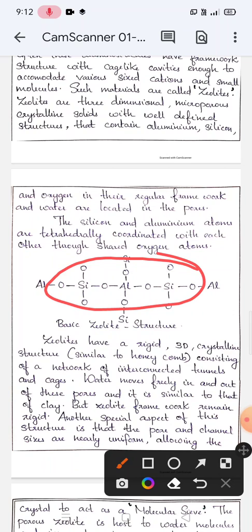Hence, zeolites have a rigid, three-dimensional crystalline structure which is similar to that of a honeycomb and it consists of a network of interconnected tunnels and cages.